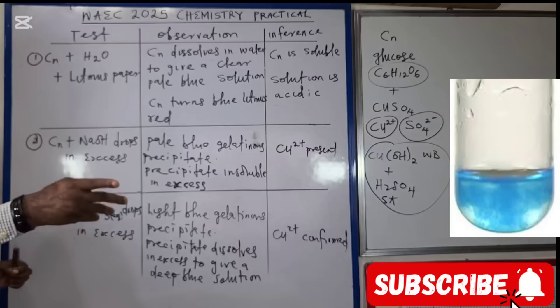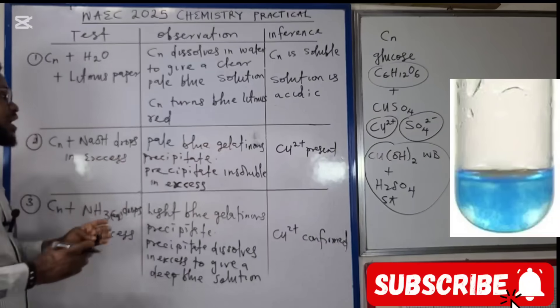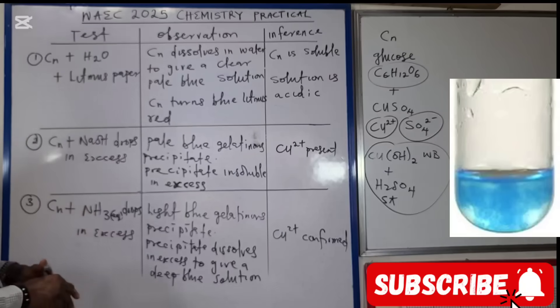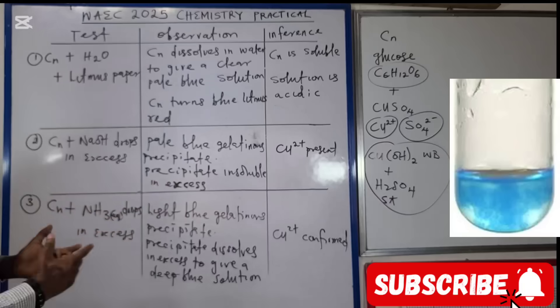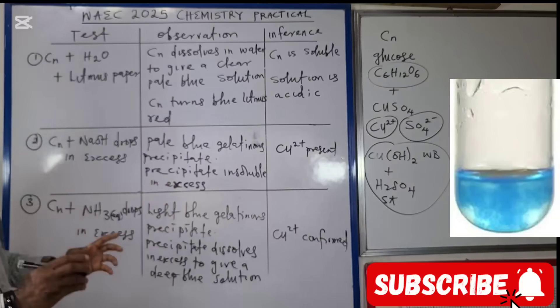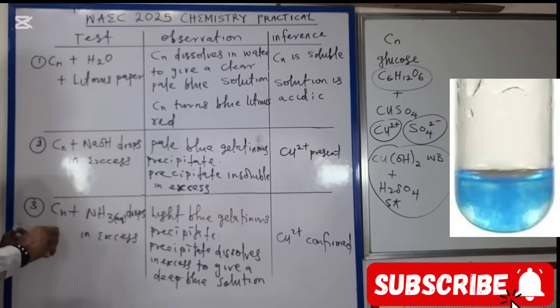CN plus sodium hydroxide in drops and then in excess, we're going to get a pale blue gelatinous or jelly-like precipitate. By the time you add excess sodium hydroxide, the precipitate is not going to dissolve - precipitate is insoluble in excess sodium hydroxide. At that point, copper two ions are present.